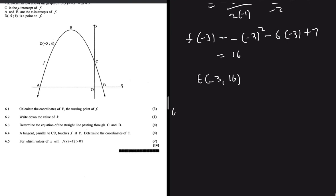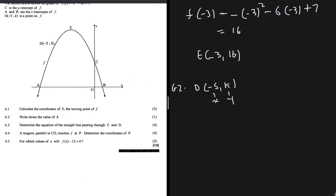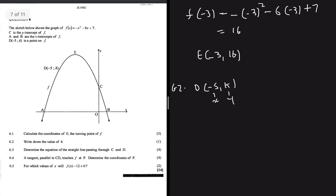Question 6.2 says determine the value of K. K is the y-value of D, where D is the point (-5, K). We substitute -5 into f(x), so f(-5) = -(-5)² - 6(-5) + 7. We expect K to be less than 16, maybe around 14 or 15, since D is just slightly below E.